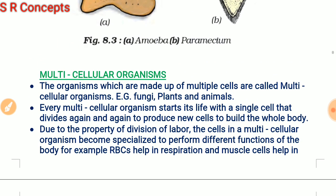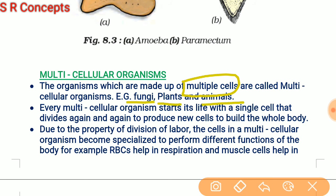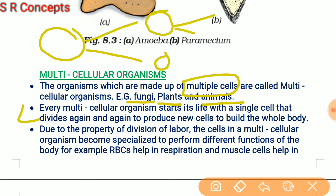Multicellular organisms have bodies made up of multiple cells. Examples include fungi, plants, and animals. An interesting fact is that every multicellular organism starts its life with a single cell, which then divides again and again to produce new cells. Over time, a large number of cells is formed, and these cells make up the body of the multicellular organism.